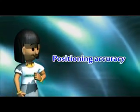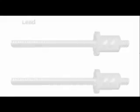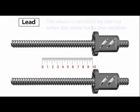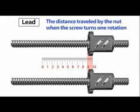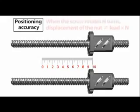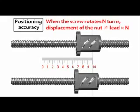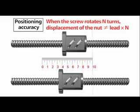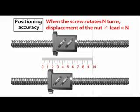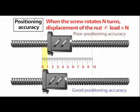Positioning Accuracy: Lead is the distance traveled by the nut when the screw turns one rotation. Loss of positioning accuracy may be caused by small differences in the lead due to manufacturing error. When the screw rotates 10 times, the displacement of the nut will not actually be exactly equivalent to 10 times the lead.